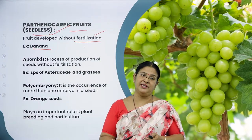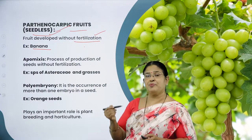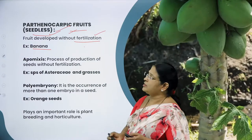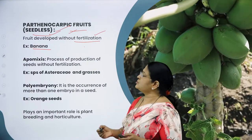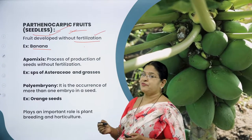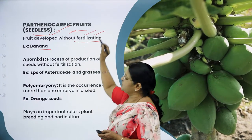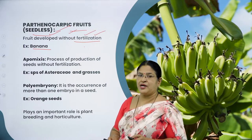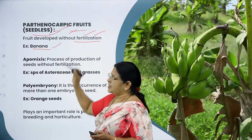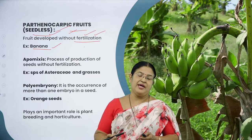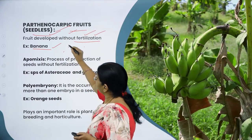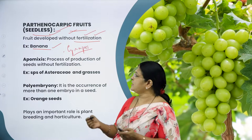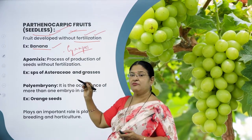The process of producing seedless fruit is called parthenocarpy, and such fruits are called parthenocarpic fruits. Natural parthenocarpy is seen in banana and certain varieties of grapes. Even parthenocarpy can be induced by spraying certain hormones like growth-promoting hormones.